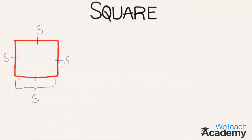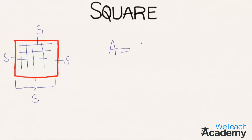Now let us discuss about the area. Area is nothing but the amount of surface inside the boundary, and this surface can be calculated by multiplying the length of the sides of a square. So area is equal to s × s, which is equal to s².